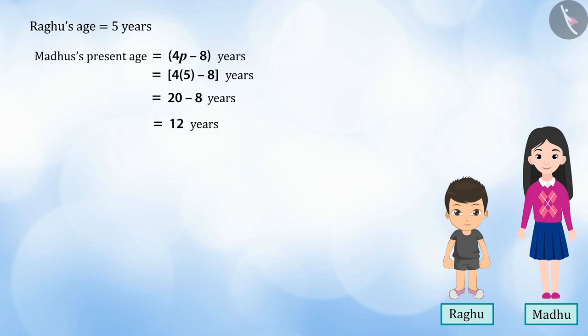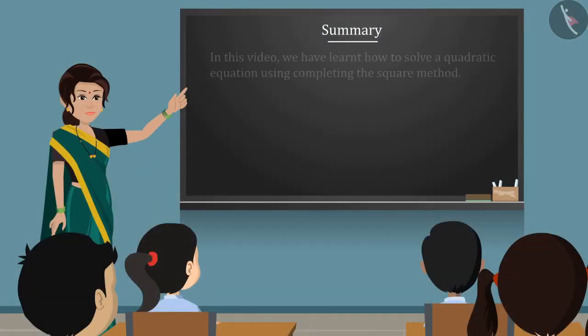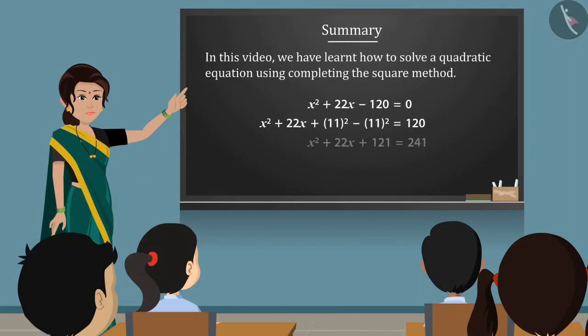The method which we have used to find the age of Raghu and Madhu is called completing the square method. In this video, we have learned how to solve a quadratic equation using completing the square method. In the next video, we shall see the common mistakes that are made while solving such equations.